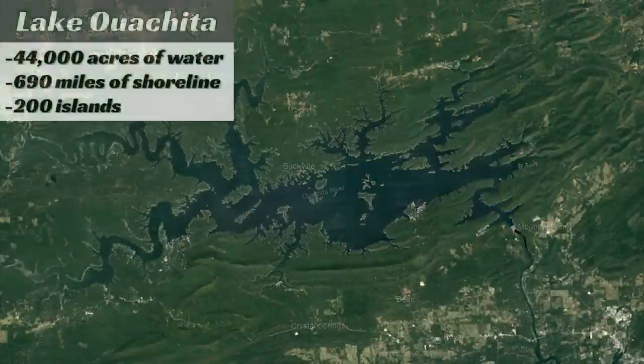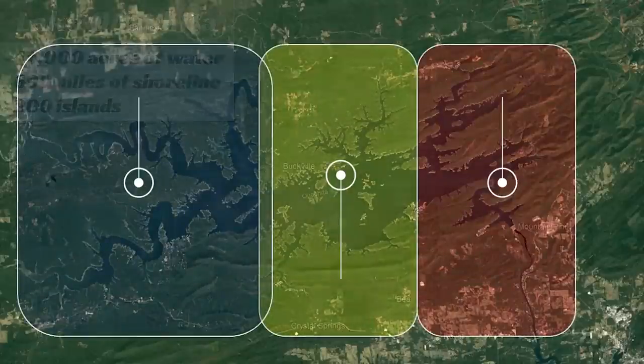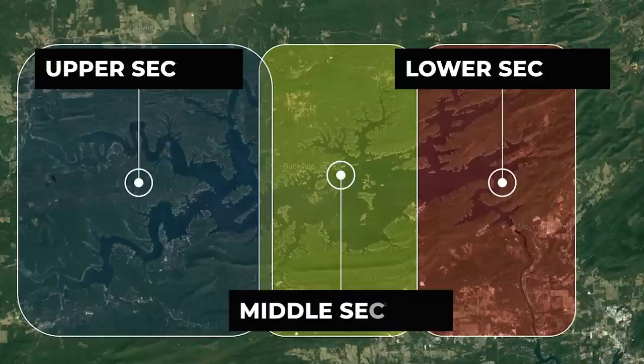I've always had success on smaller lakes, and then I had a 'aha' moment one year and took that to bigger lakes. For example, we have Lake Ouachita, located in central Arkansas. This lake is 44,000 acres, but it has approximately 690 miles of shoreline and over 200 islands. I think of this lake in three sections: a lower end, a middle section, and then an upper section.